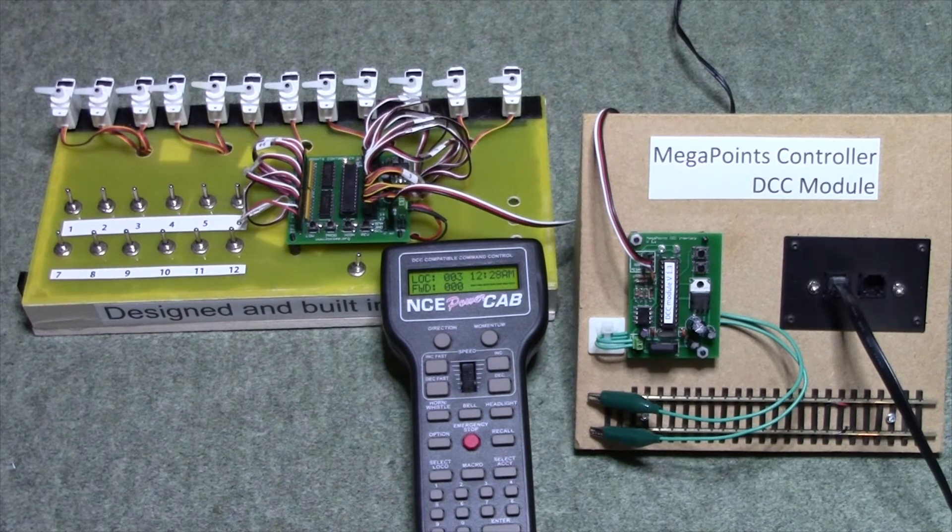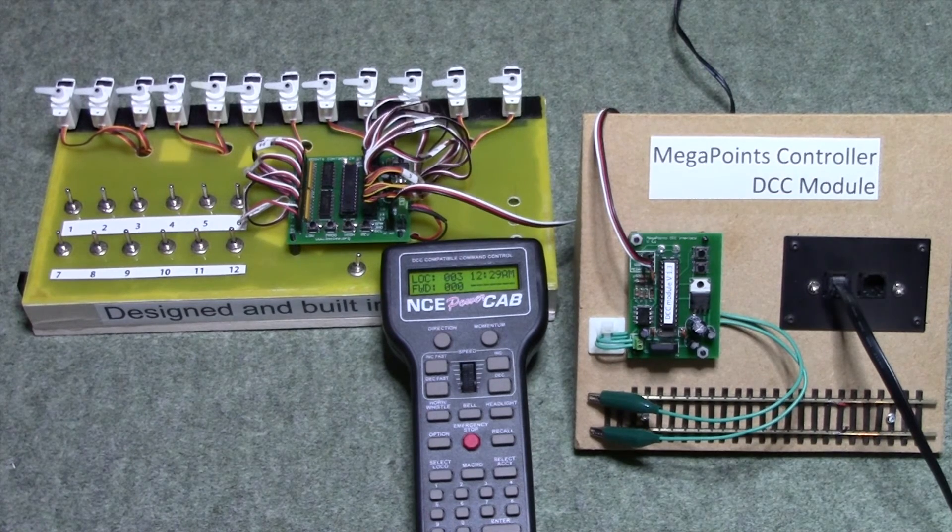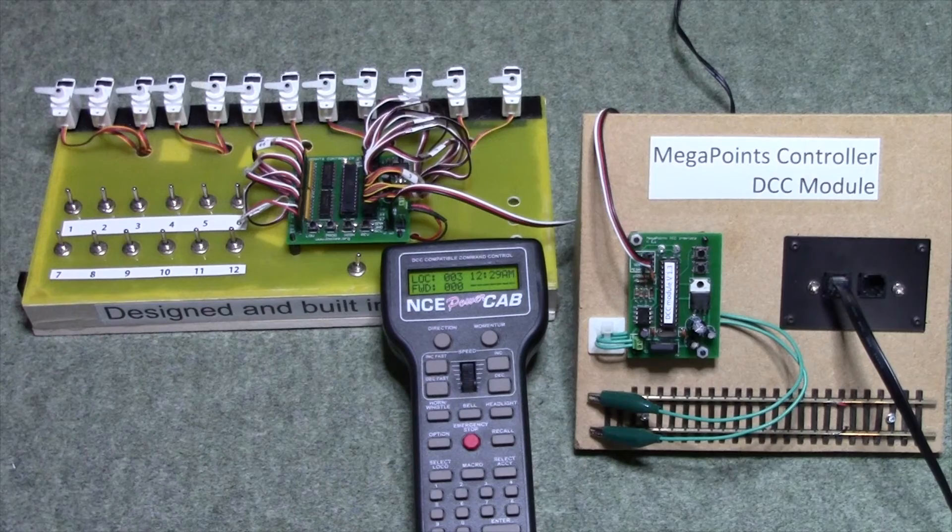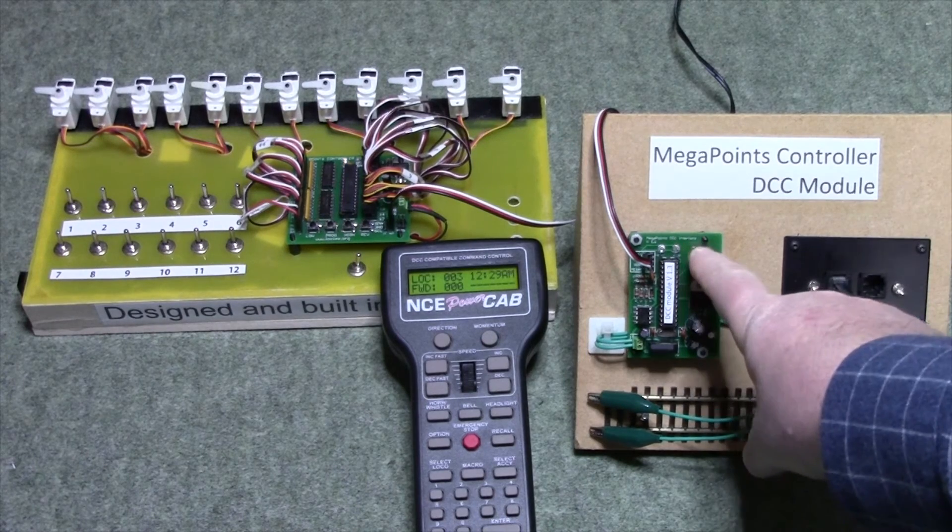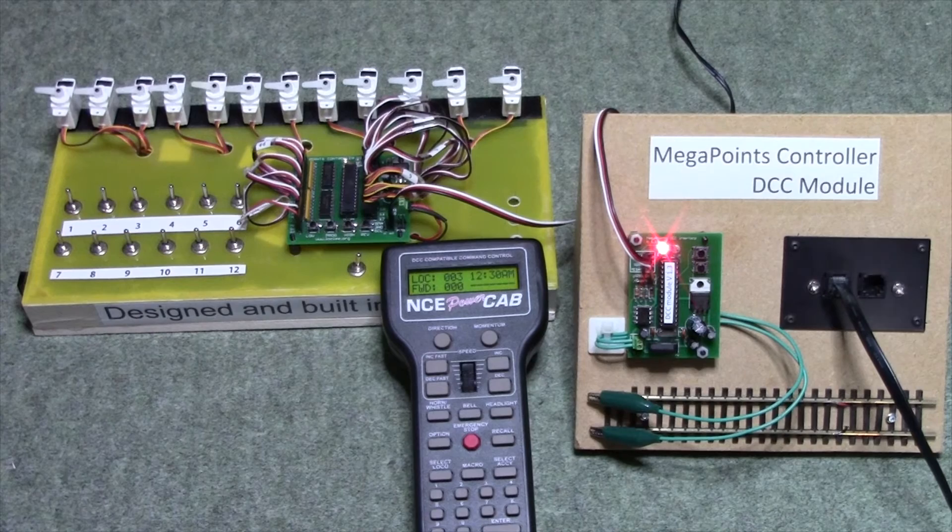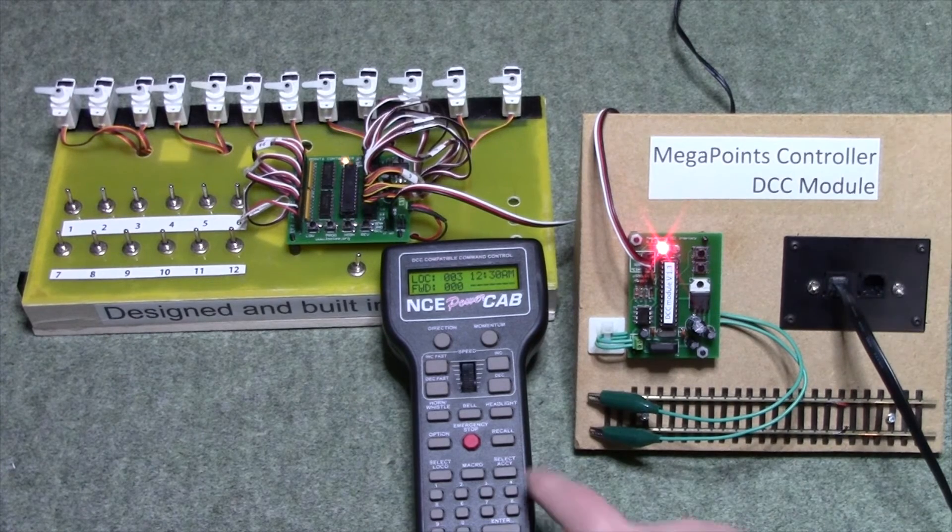To change the DCC address of the module to something different such as 150, press and hold the top button. The red light comes on. It's ready to learn a new address. Send a packet.